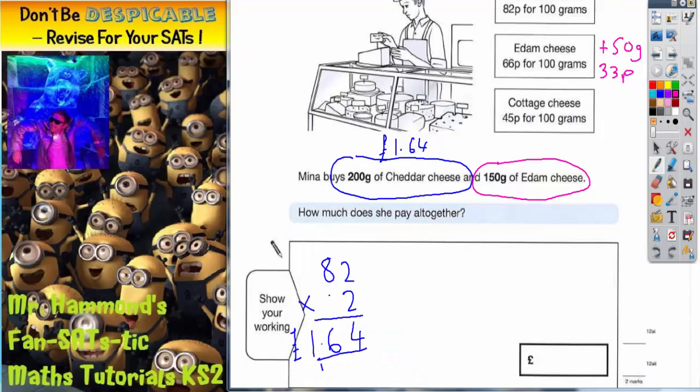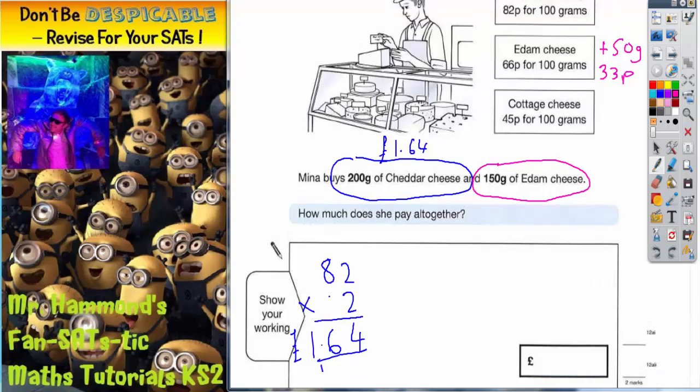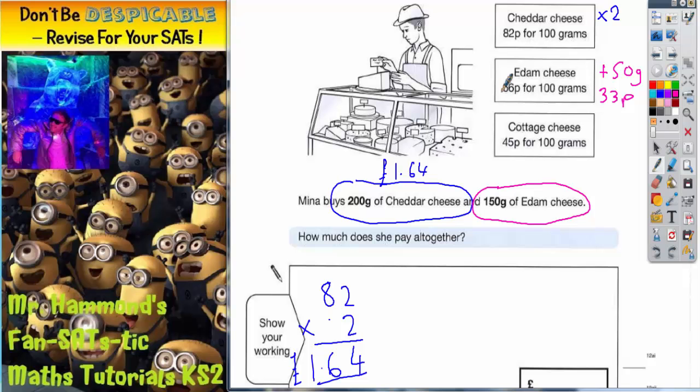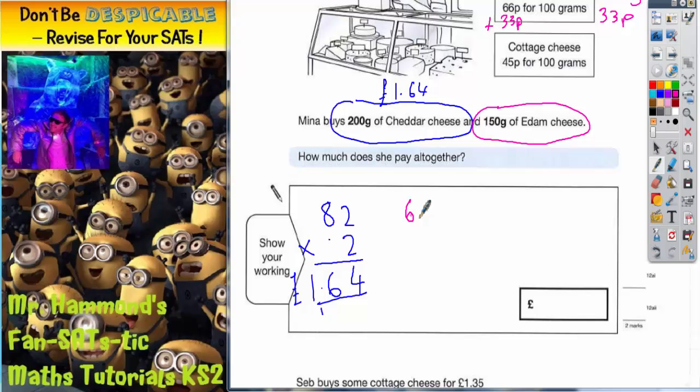Going back down to our working out, to get 150 grams we're going to have to add the 66 pence to the 33 pence. So we've got 66 pence, 33 pence - let's add those together using the column method again. 6 and 3 is 9, 6 and 3 is 9 again, so that's 99 pence.